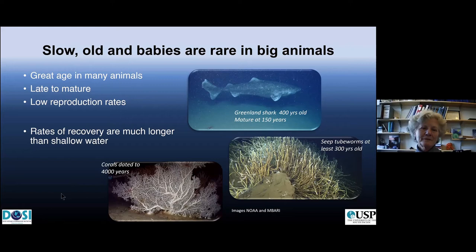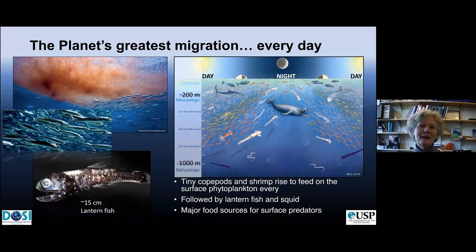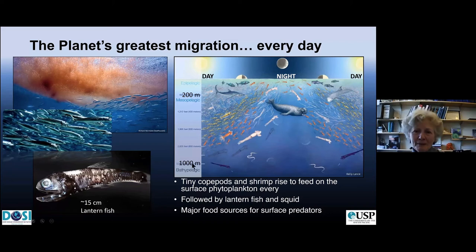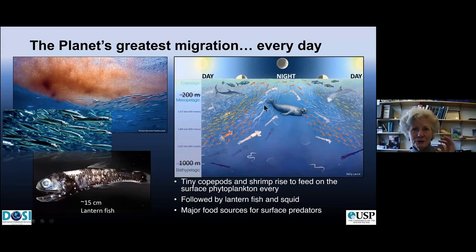One of the amazing migrations on our planet happens every day from the deep sea. The shrimp that live deep migrate up to the surface every dusk, as the sun is going down, to feed on the phytoplankton at the surface. They are followed by deep-water fish such as lantern fish, and squid come up as well. They're coming up from depths as deep as a thousand meters, then go back down when the sun comes up to avoid predators. This is really important to the predators in the upper layers — whatever they can get at night is a big food source.